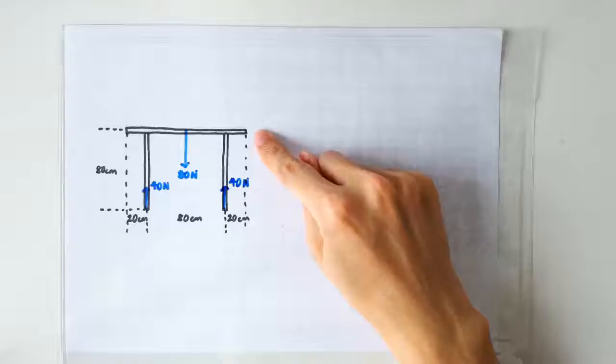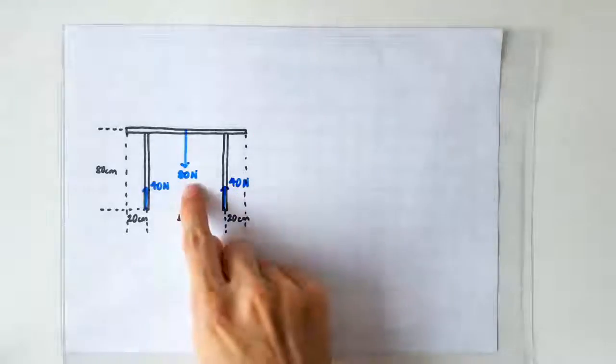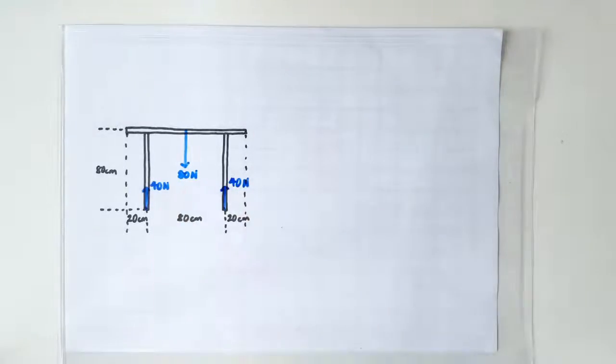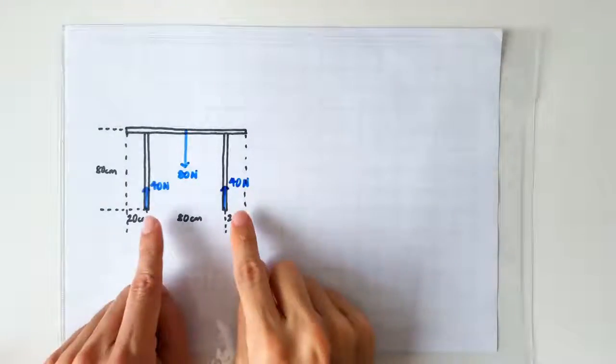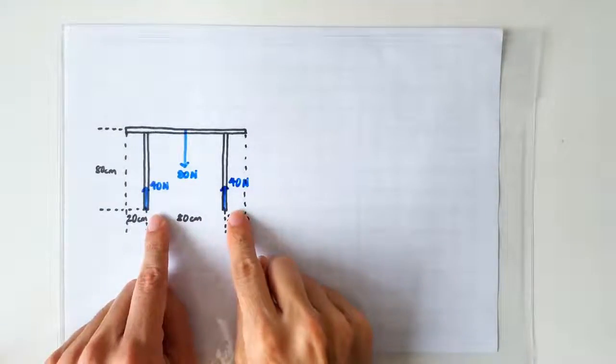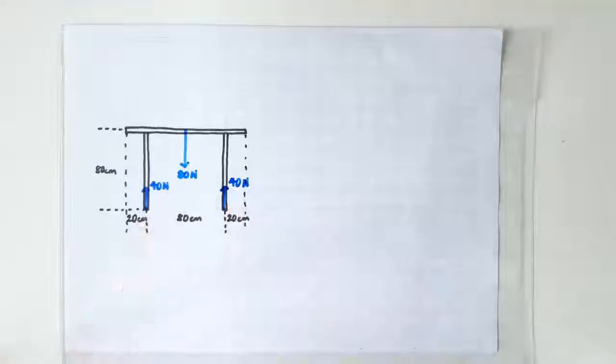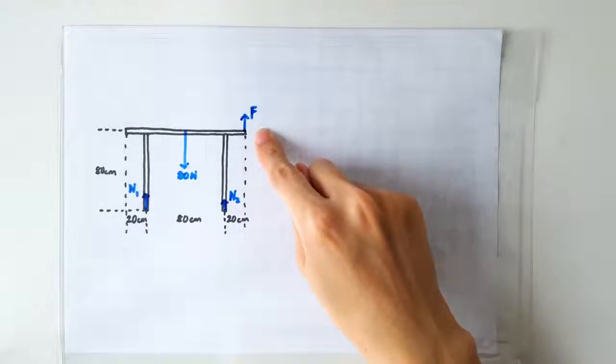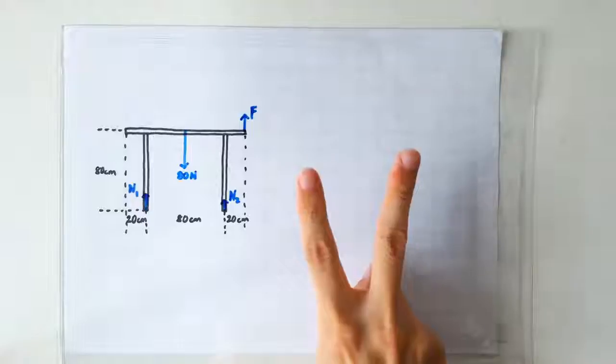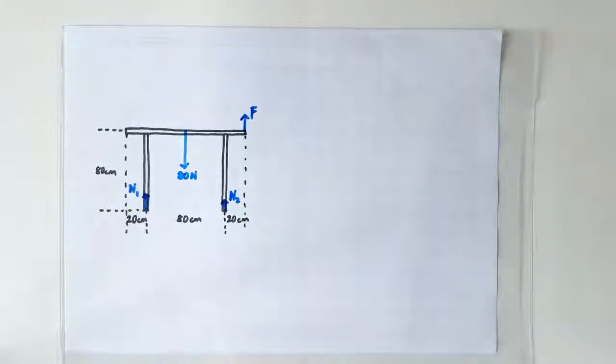Before we apply the lifting force, we know that the 80 newtons weight of the table would have been supported by a 40 newton normal contact force on each leg of the table. When the lifting force comes into the picture, then two changes happen to these two normal contact forces here.